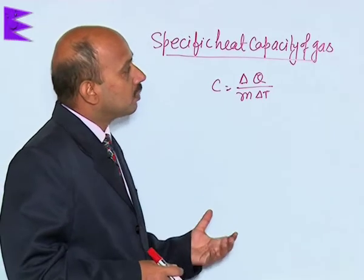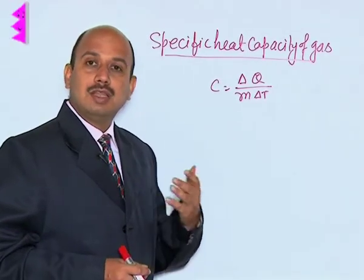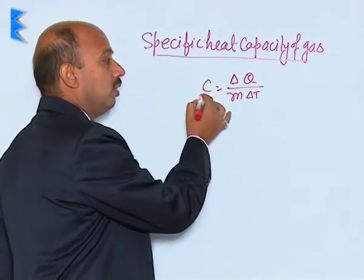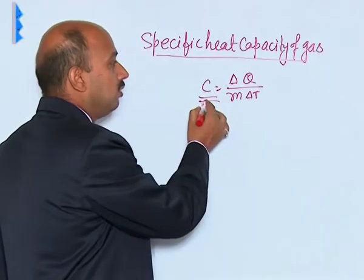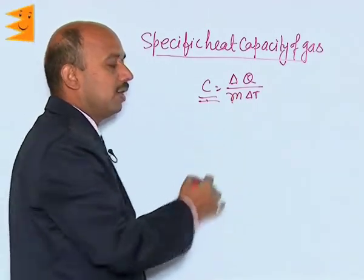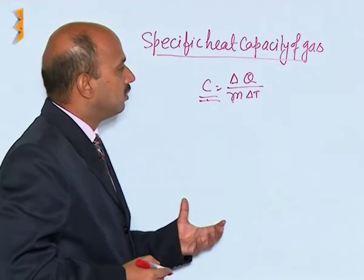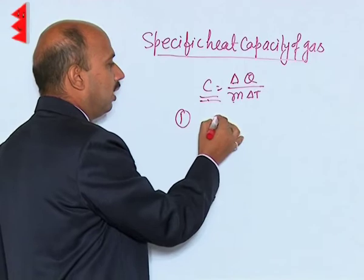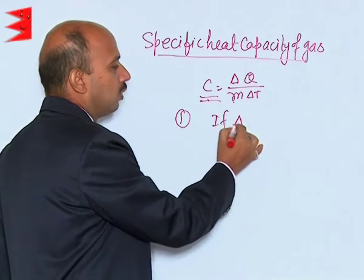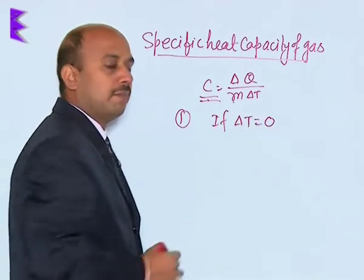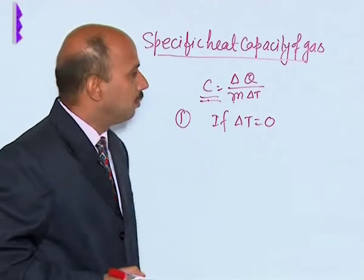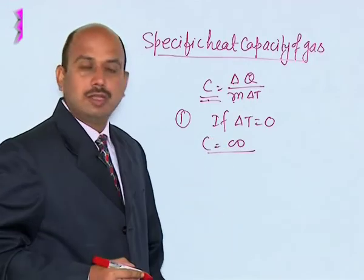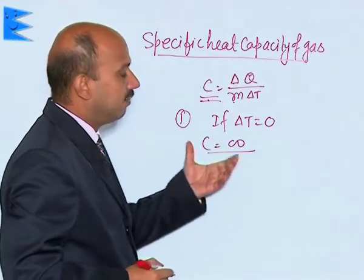In the case of gases, there are certain limitations. For any gas, C is equal to delta Q upon m delta T, and we can write this expression as molar specific heat also. Consider the first process: if delta T is equal to 0, there is no change in temperature — that is the case of the isothermal process. So C will be infinite, meaning the specific heat of gas is infinite in this case.